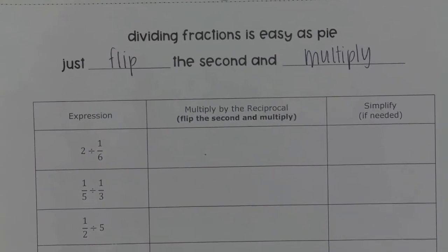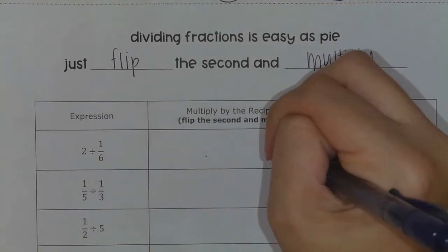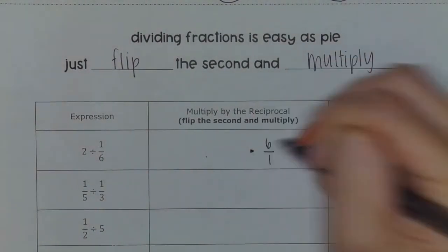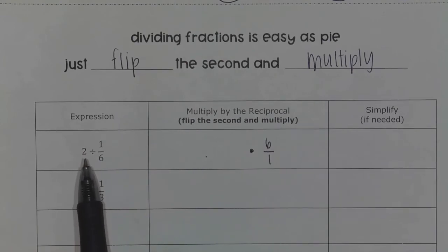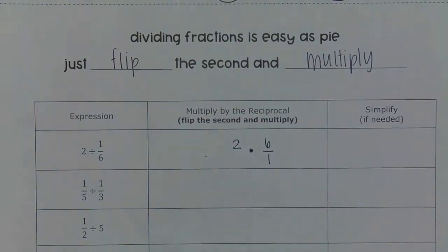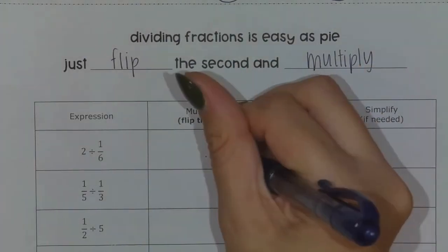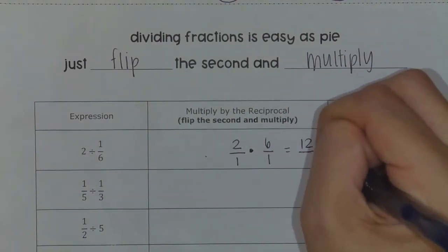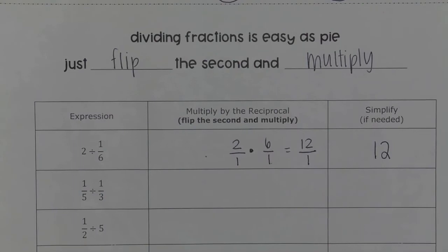My very first problem is two divided by one-sixth. I'm going to flip the second — so instead of one over six, it would be six over one — and multiply, changing the division to multiplication. Our rhyme doesn't say anything about the first number because we keep it the same. So it starts with two and stays two. Two is a whole number, so it gets a denominator of one. Two times six gives me 12, one times one gives me one, and 12 over one simplifies to a final answer of 12.